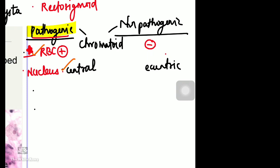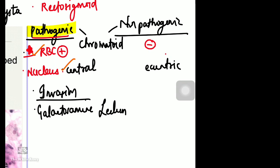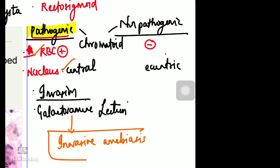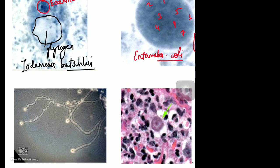An important pathophysiological point: for invasion, Entamoeba histolytica uses a particular antigen called galactosamine lectin. This galactosamine lectin is a marker of invasion and helps in the diagnosis of invasive amoebiasis. As there is more proliferation, there is more antigen secretion, causing invasive amoebiasis.